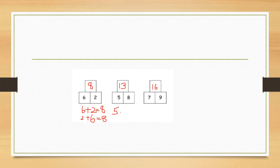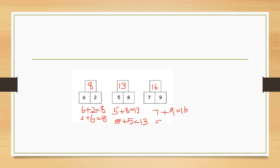Next, 5 plus 8 is equal to 13. 8 plus 9 is equal to 13. Next, 7 plus 9 is equal to 16. We can also say that 9 plus 7 is equal to 16. One addition number sentence — we will write this here. Now we will add three numbers.